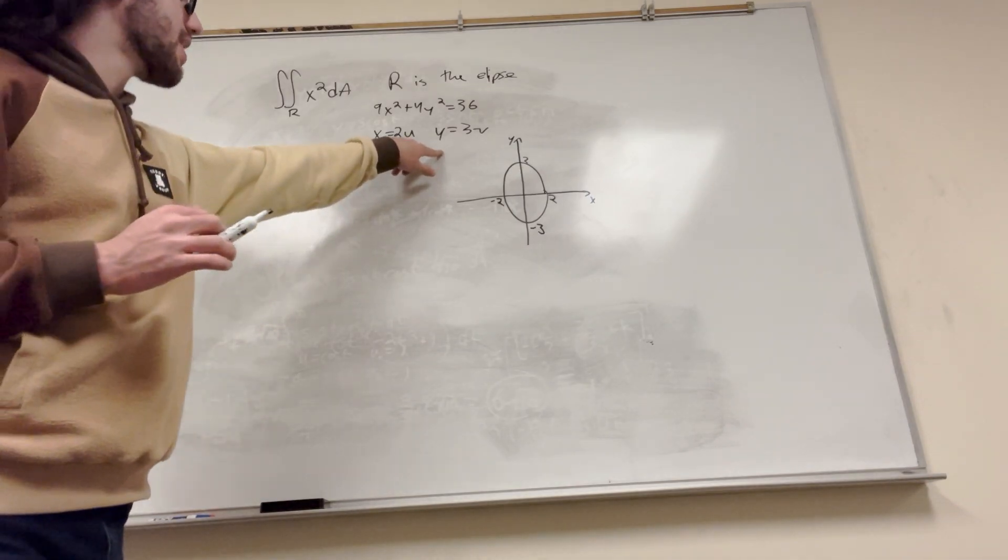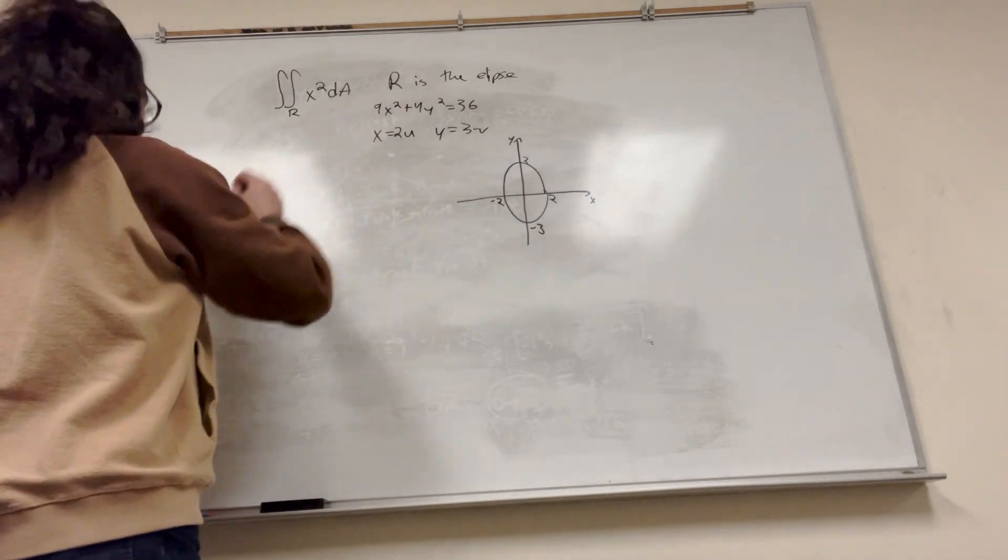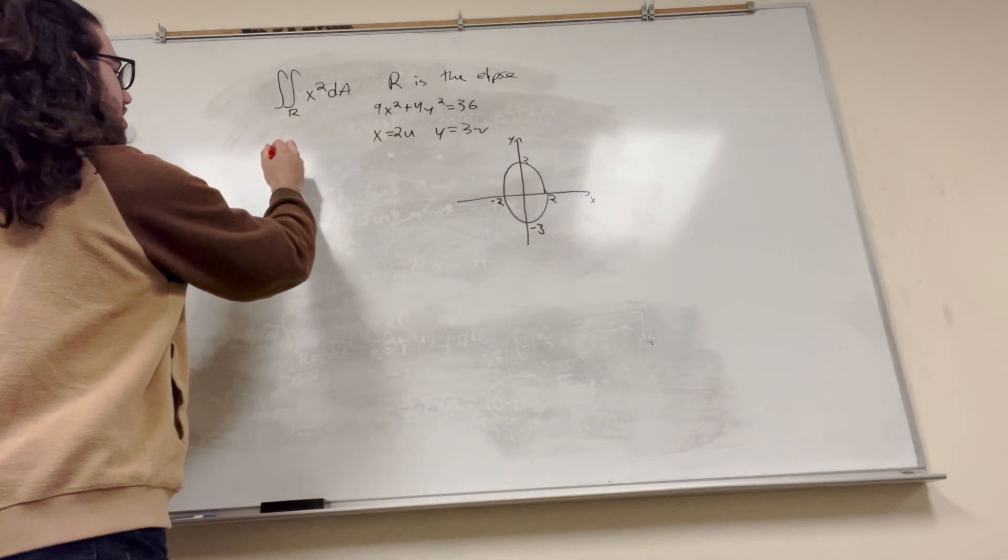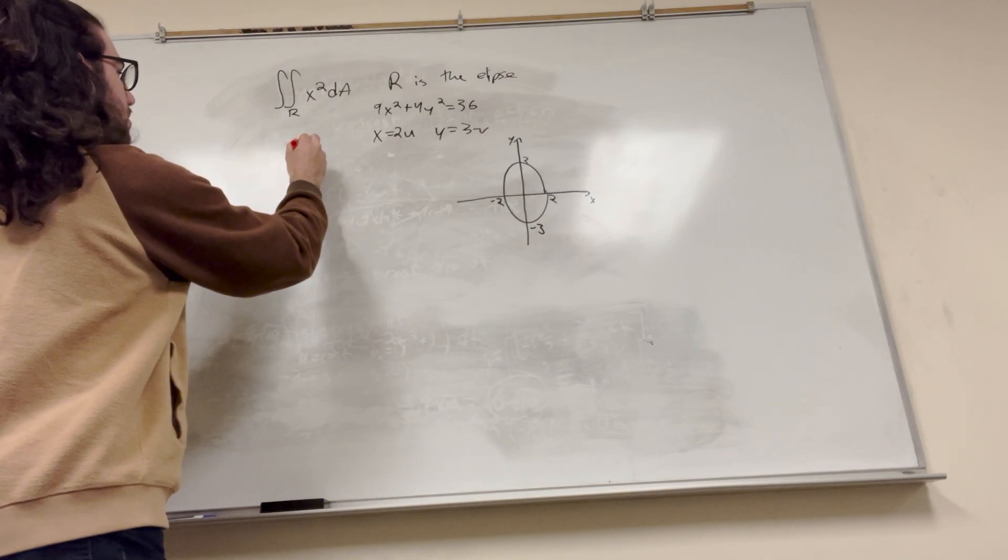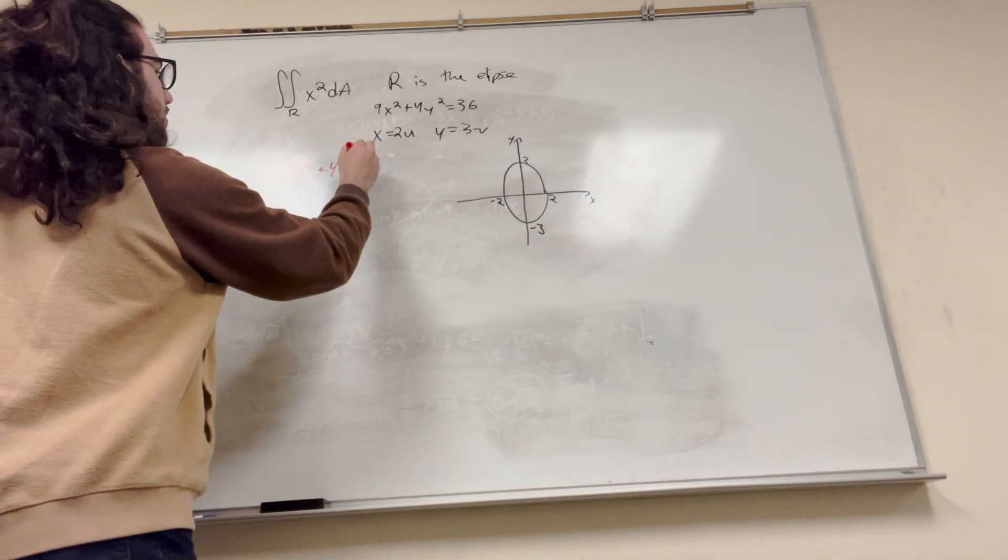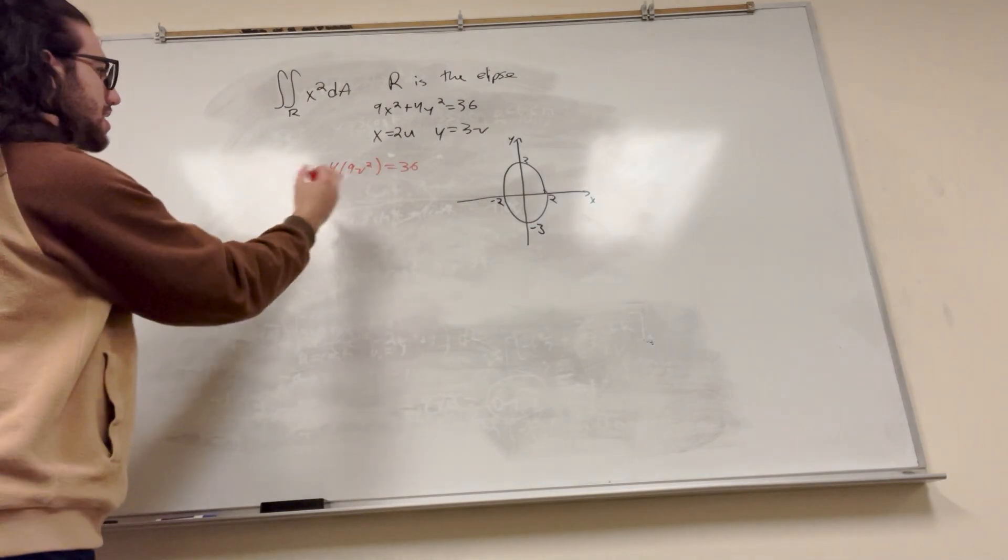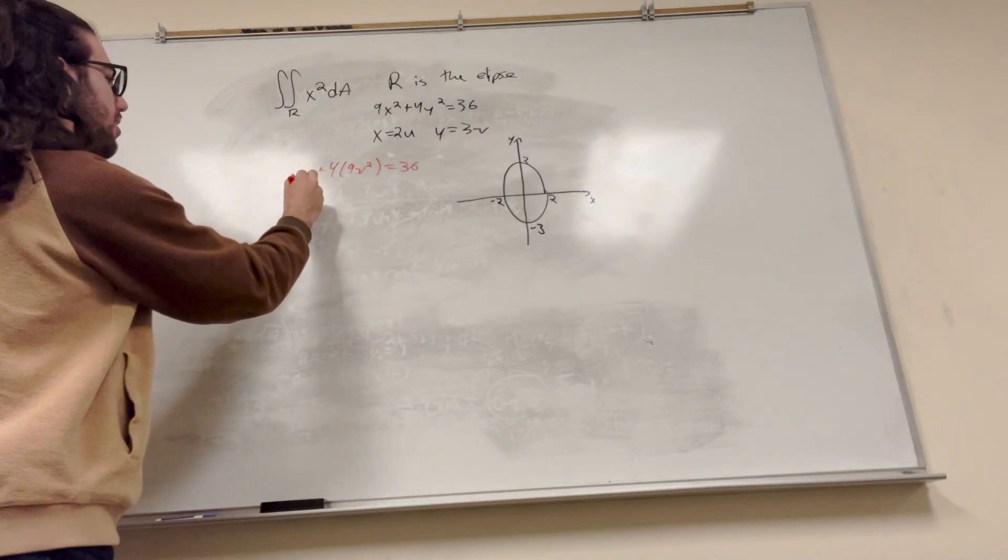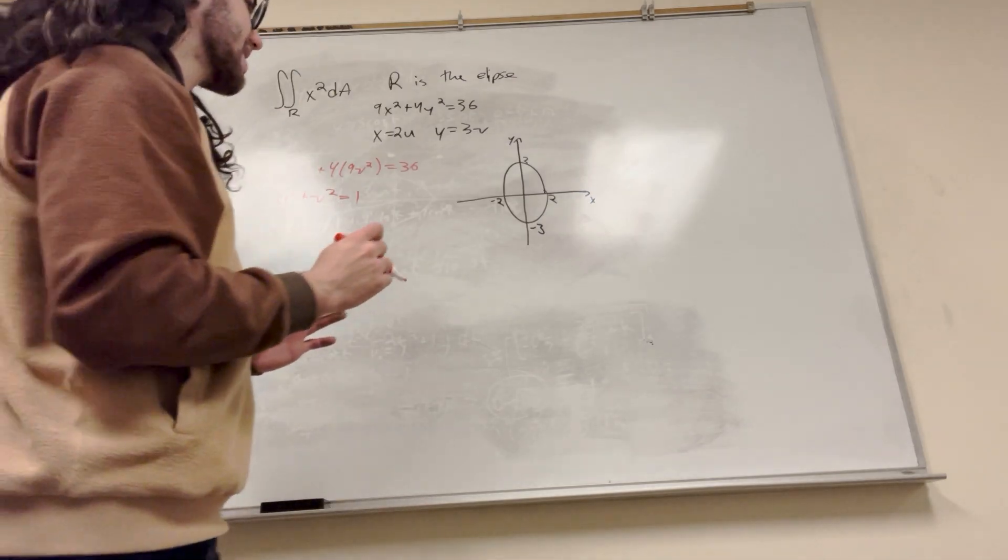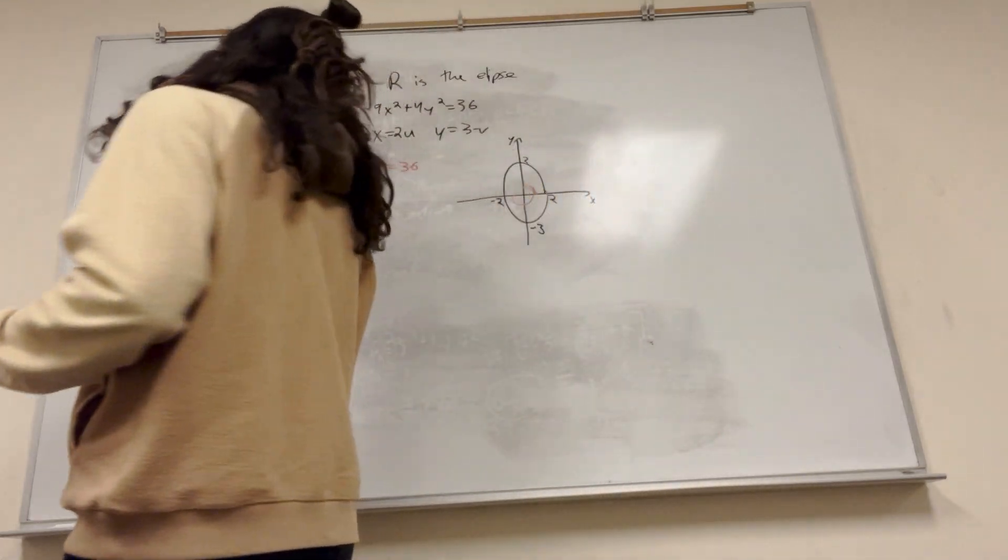So it gives us these bounds. Wow, how perfect for these change of variables. And all you have to do is plug them in. So let's plug them in and get our new equation. So plug in x, it's going to be 9, 4u squared plus 4, 9v squared is equal to 36. Well, you'll notice that these will both become 36, so you can actually just rewrite this as u squared plus v squared is equal to 1, which is way nicer. It's going to look something like this, a circle with radius of 1. So much easier to evaluate.